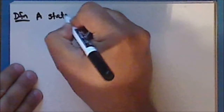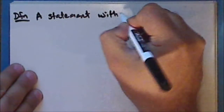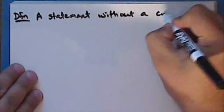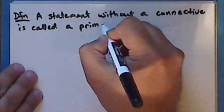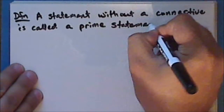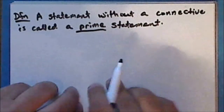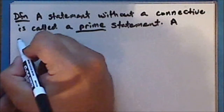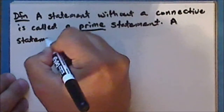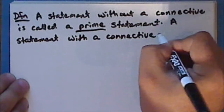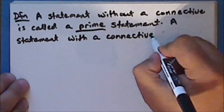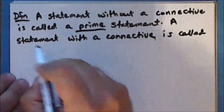New definition: a statement without a connective is called a prime statement. A statement with a connective is called a composite statement.